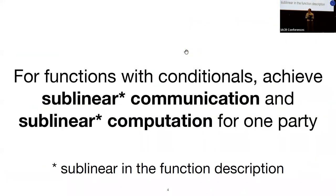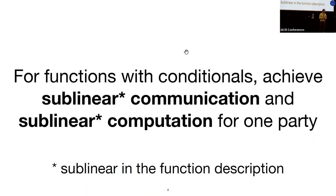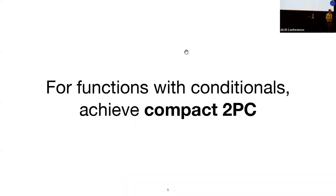To restate: for functions with conditionals we'd like to achieve sublinear communication and sublinear computation for one party. For brevity, I'm going to call this double-sublinear property 'compactness.' So we want to achieve compact 2PC, which means sublinear communication and sublinear computation for one party.